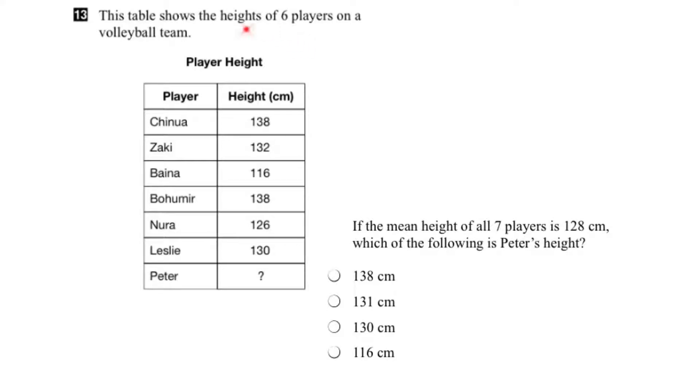In question 13, we're given a table that shows the heights of players on a volleyball team. The table includes figures for all players except for one, Peter. We're also told the mean height for all the players is 128 centimeters. Given this information, we have to figure out Peter's height.